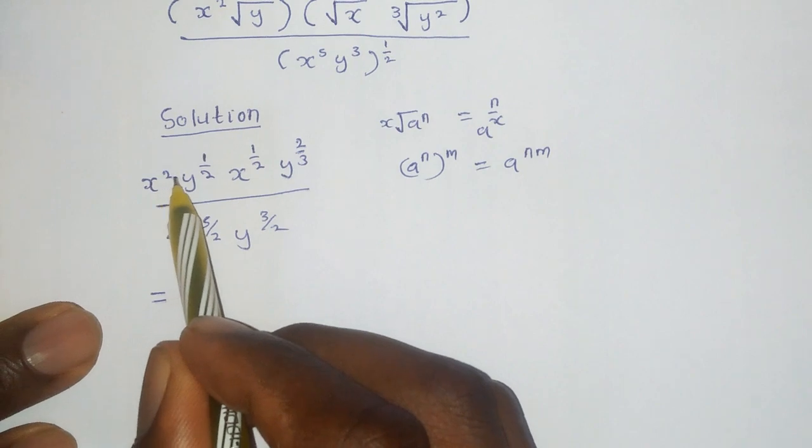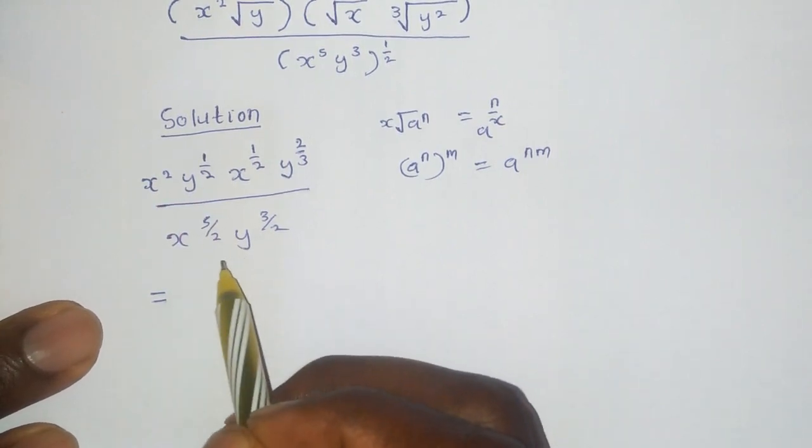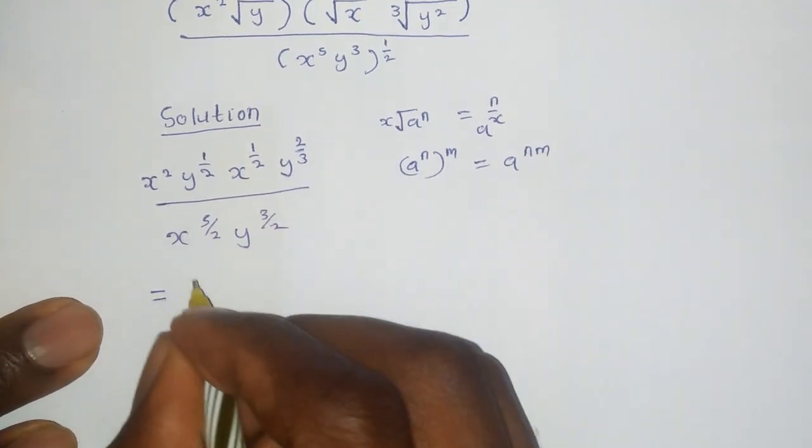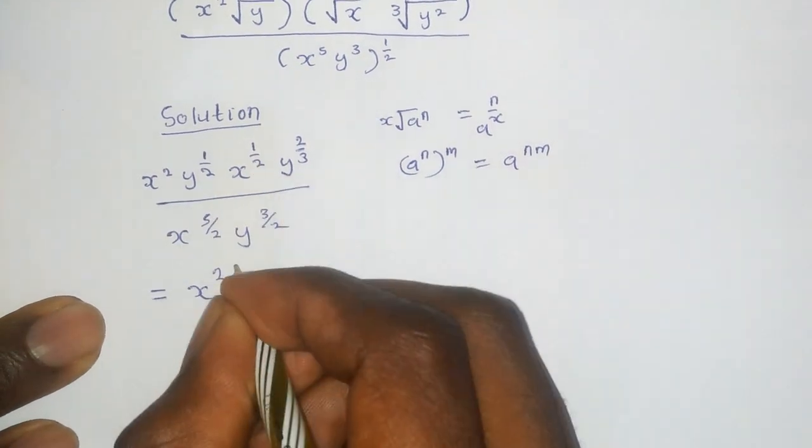for example, x raised to 2 and x raised to 5 divided by 2, we are dividing. It means we will subtract the powers, that will be x raised to 2 plus a half here.